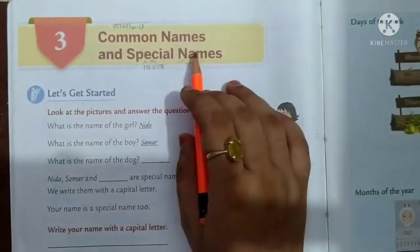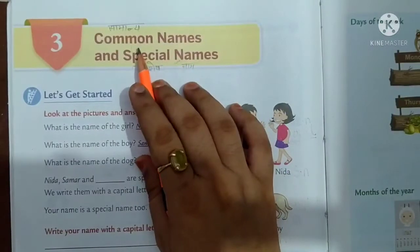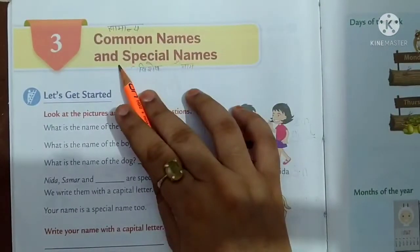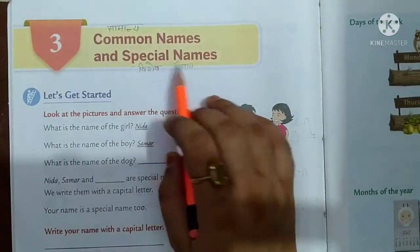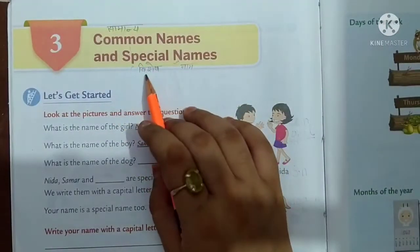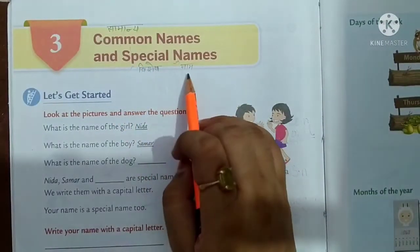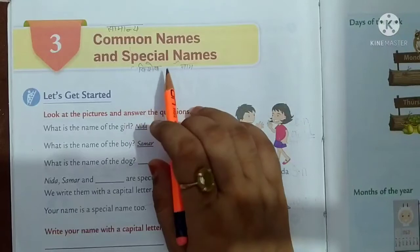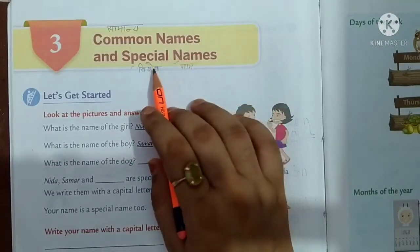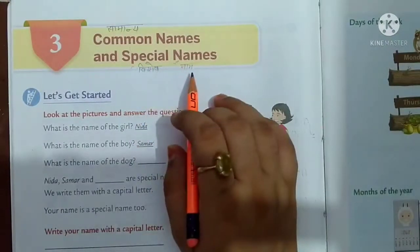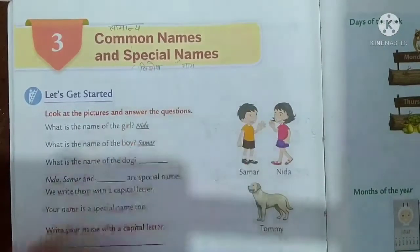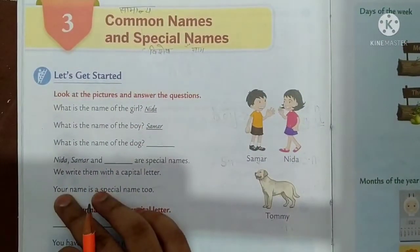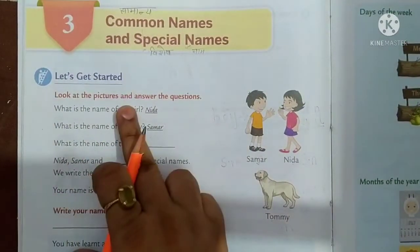Common names. Common means Samanya. Names means name. Special names means Visas Naam. So we have Samanya Naam and Visas Naam. Let's get started.